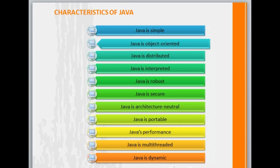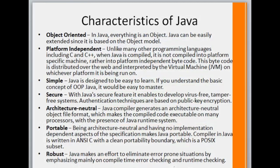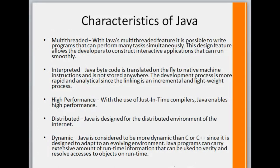Java is a very secure language. It is architectural neutral. Java is portable, meaning Java programs follow the concept of WORA — Write Once Run Anywhere. It can run on any platform and it is multi-threaded. It has a feature of multi-threading and it's a very dynamic language which can be used on any platform for any purpose. So these are the few characteristics of Java.